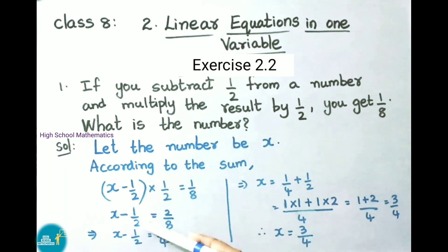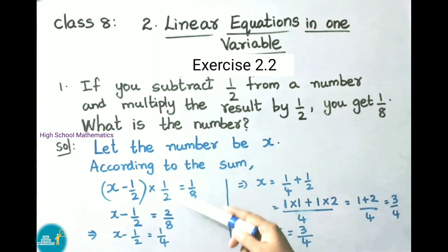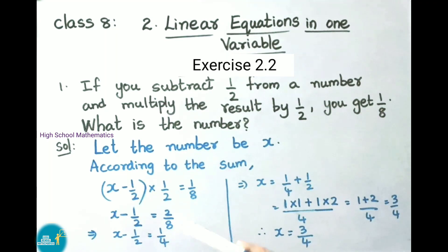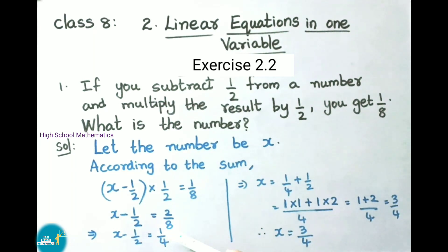We write x minus 1/2 as it is. Here 1/2 is there; on transposing it becomes 2/1, so we have written here 2/8. In the next step, x minus 1/2 equals 2/8; on cancellation using the 2 times table, we get x minus 1/2 equals 1/4.